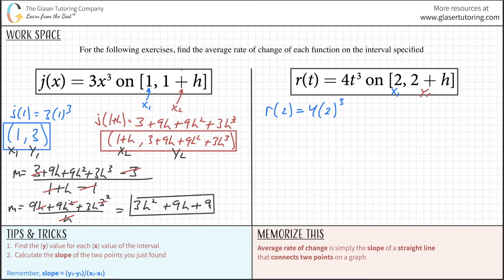When we take our x1 value, we're finding r of 2. Plug in 2 for t. This will be 2 cubed times 4, which is 32. Our coordinate is (2, 32). Let's box that.